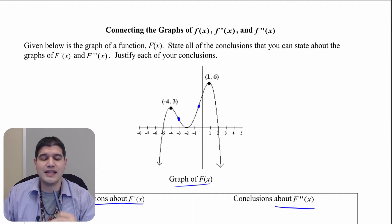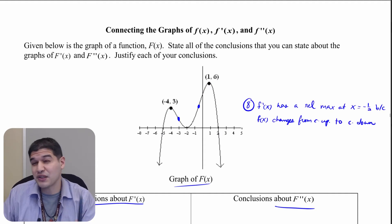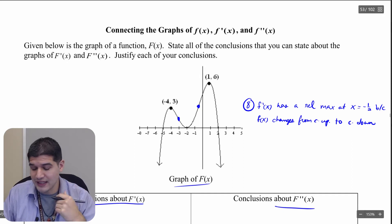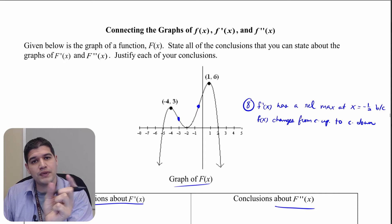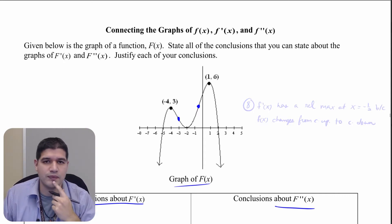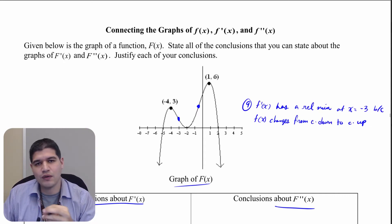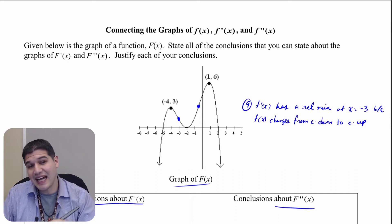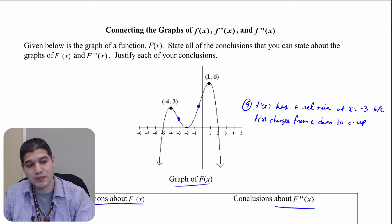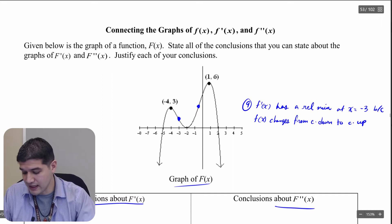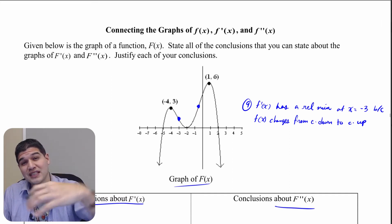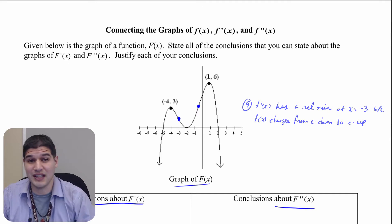F prime is going to have a relative maximum at x equals negative one-half because the graph is changing from concave up to concave down there. And f prime is going to have a relative minimum at x equals negative 3 because it's changing from concave down to concave up at that point.